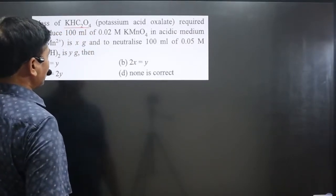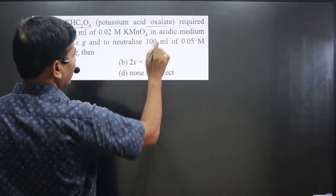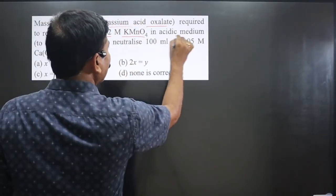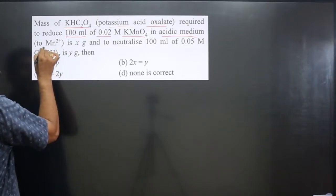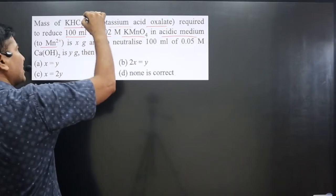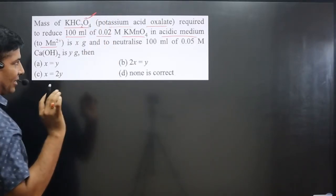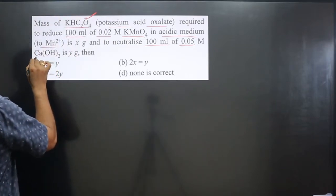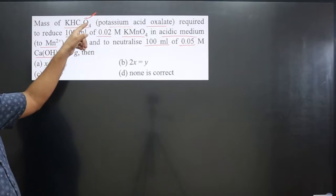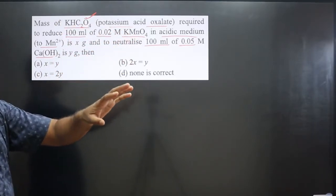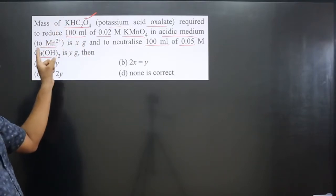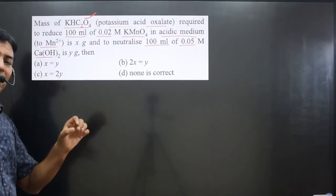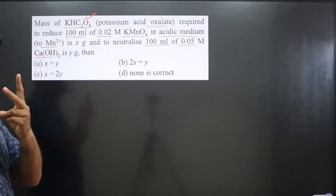The question states: mass of KHC2O4 (potassium acid oxalate) required to reduce 100 ml of 0.02 molar KMnO4, a strong oxidizing agent in acidic medium converting to Mn²⁺, is x grams. To neutralize 100 ml of 0.05 molar calcium hydroxide is y grams. We have to find the relation between x and y based on the options given. Two chemical reactions are taking place.